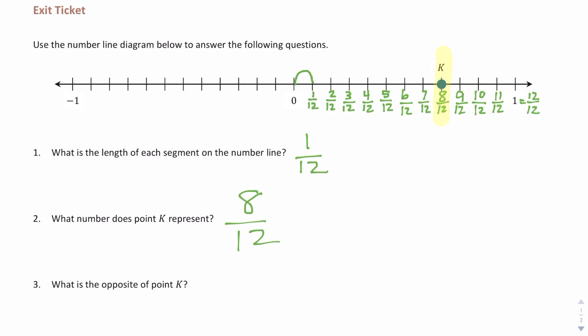Question number three, what is the opposite of point K? Well, opposites work exactly the same as they do with integers. Remember, an integer is a whole number that is positive, negative, or zero. The easy way is to identify that the number is eight twelfths. So the opposite is simply the negative version of that. If the number were negative, it would just be the positive version of that number.